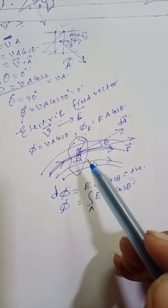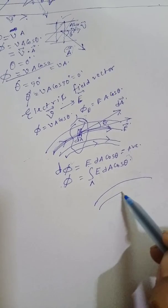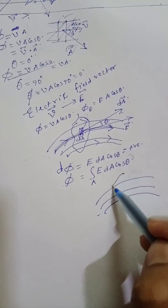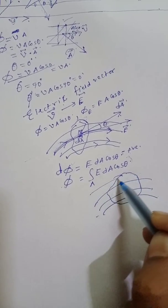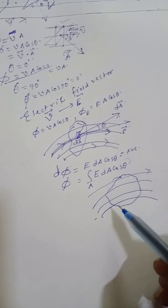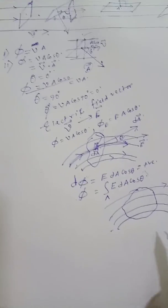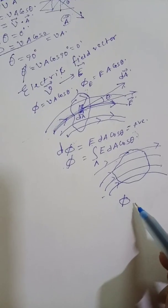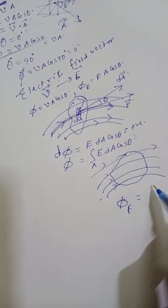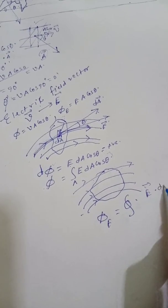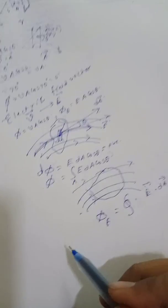The net flux through the surface is given by: if you consider this surface with electric lines of forces passing through it — it is an enclosure like a balloon — then the electric flux phi E is equal to the surface integral of E dot dA.